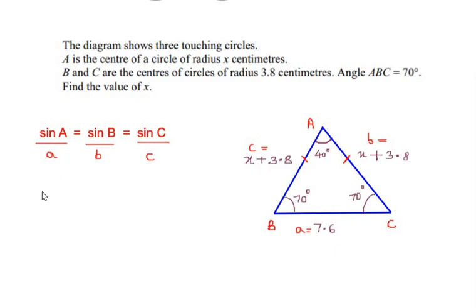So we have here sine of angle A which we got it as 40 degrees over the side a which is 7.6 equals sine of angle B which we have as 70 degrees over side b. So opposite to that is x plus 3.8.